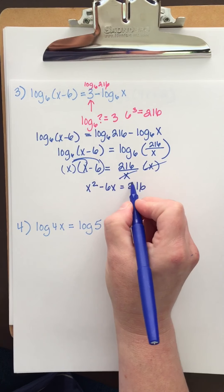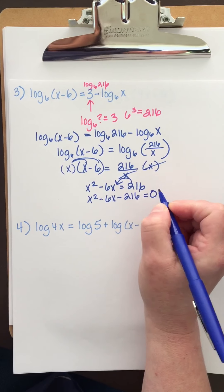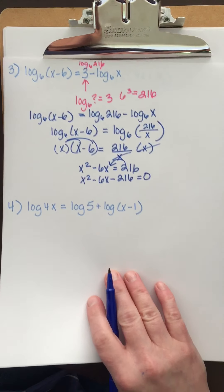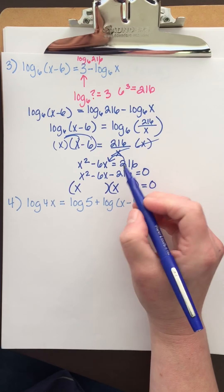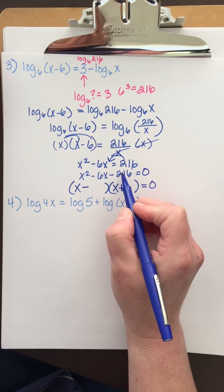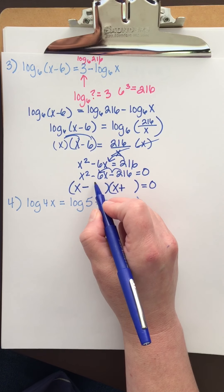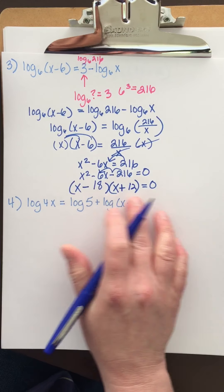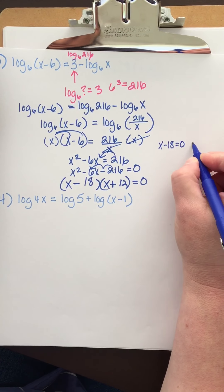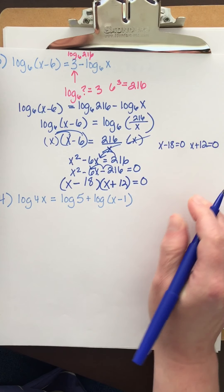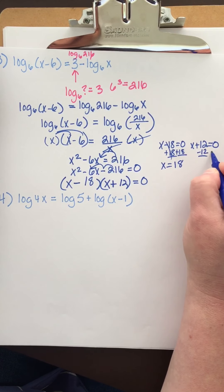I see this is quadratic, so I'm going to move 216 to the other side — that makes it negative. When I can factor, that's what I like to do. I'll have x and x; the signs are different and the boss is negative. I want factors of 216 that subtract to give me six — that's 18 and 12. Setting the factors equal to zero: x minus 18 equals zero and x plus 12 equals zero, giving x equals positive 18 and x equals negative 12.